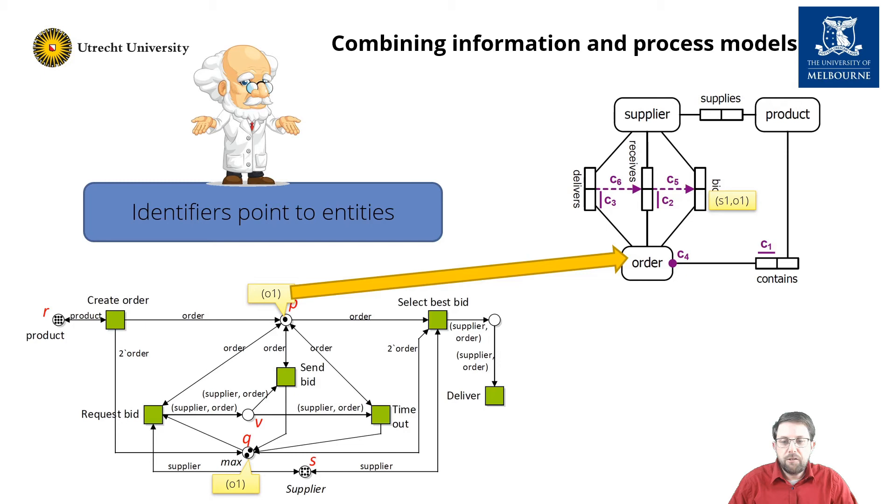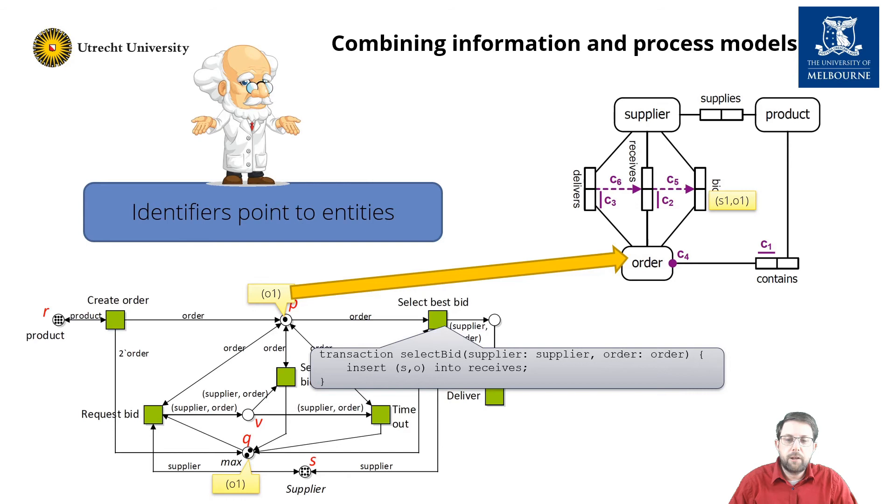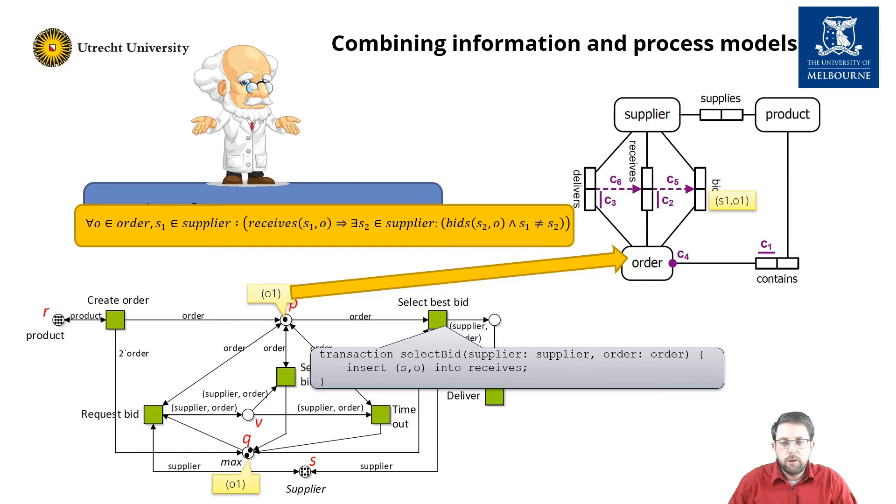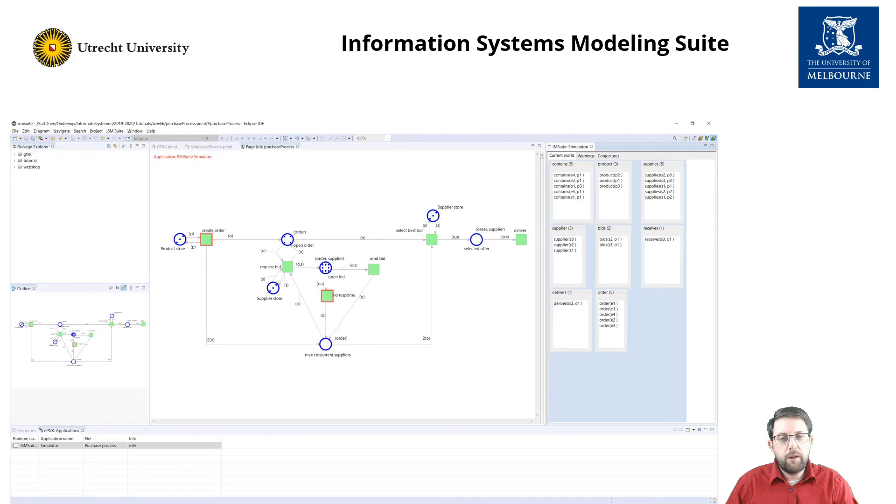Thus, in our case, transition select best bid has the transaction that adds a tuple to the receive relation. The information model has the domain constraint that in order to add a tuple to the receive relation, there should be at least two bids by different suppliers, as this formula shows. As a consequence, although the transition is enabled in the PNID, it is not enabled in the current information system model, as there is only one supplier that bids on the order o1. Hence, firing it would violate the domain constraint.